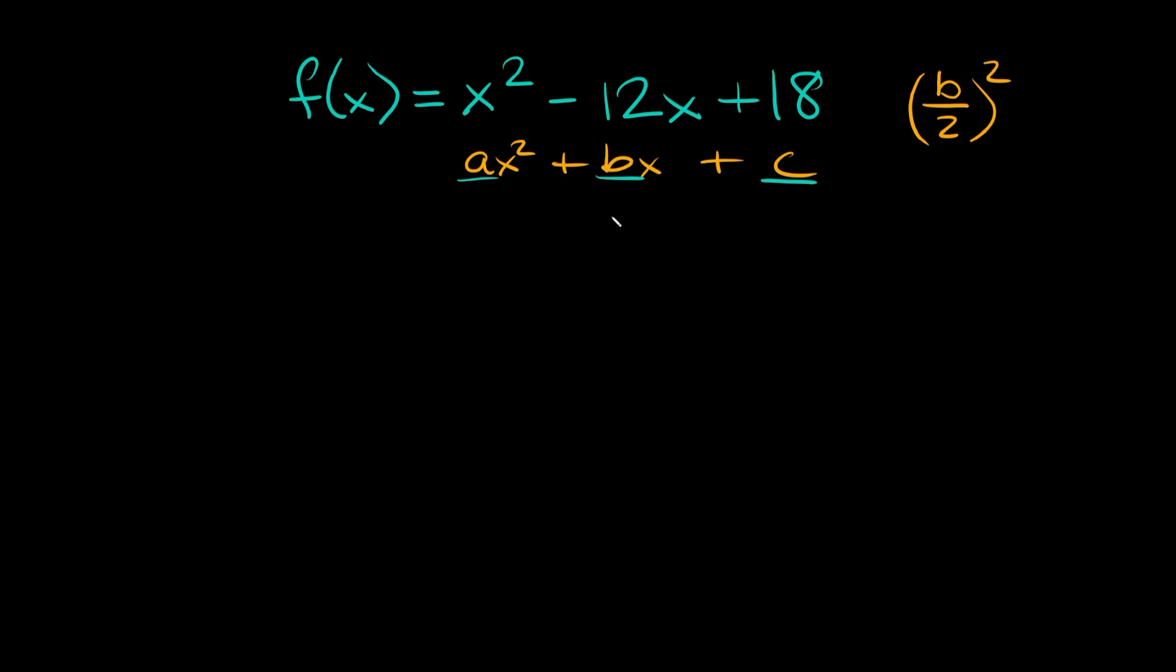In this case, what is b equal to? This would be negative 12, so we're going to plug in -12 for b. We get (-12/2)², and -12 divided by 2 equals -6, so we get (-6)² which equals positive 36.